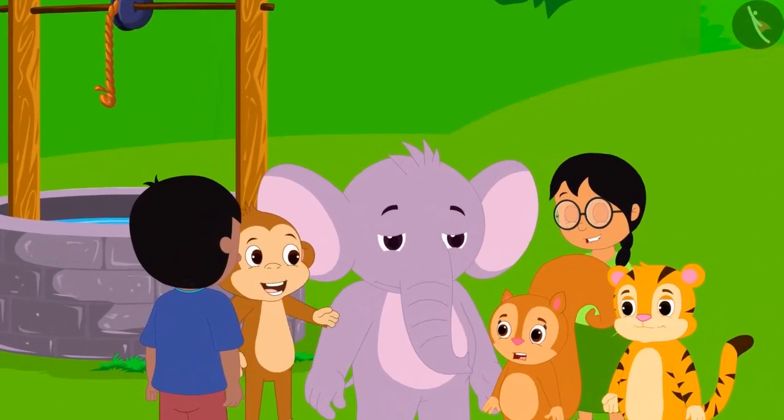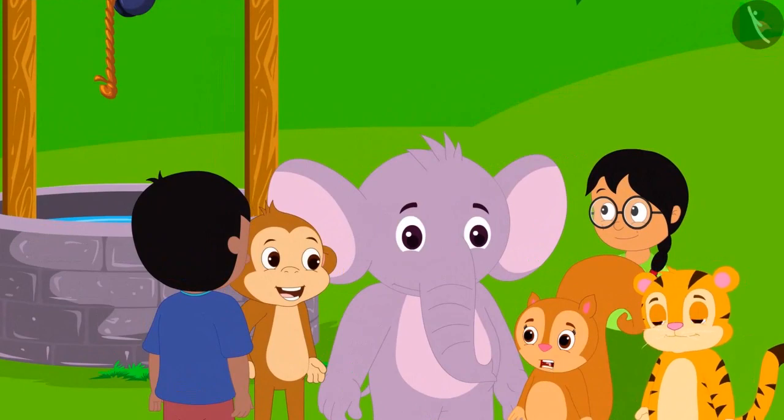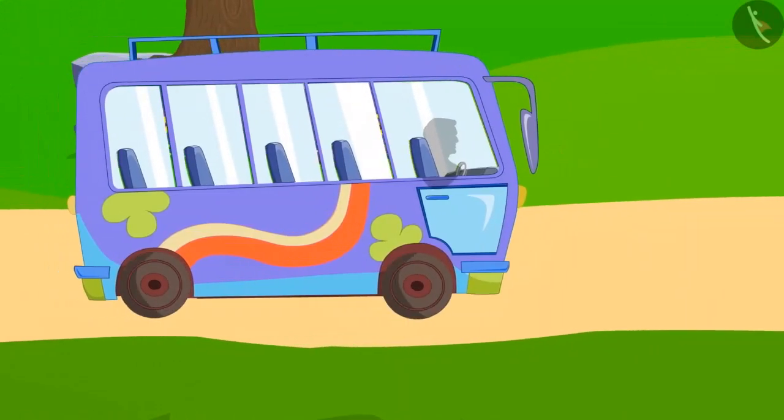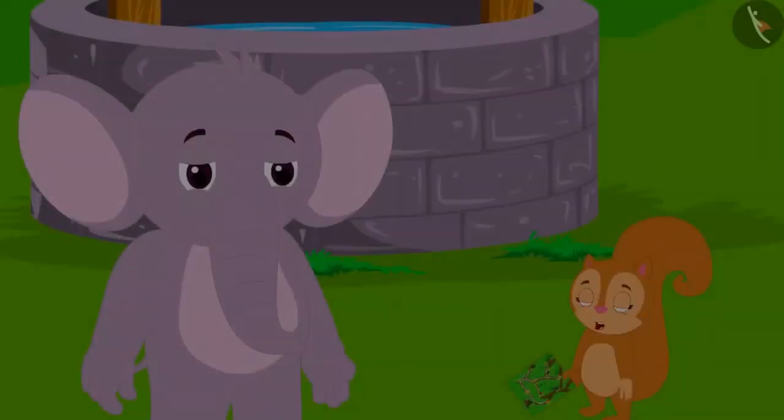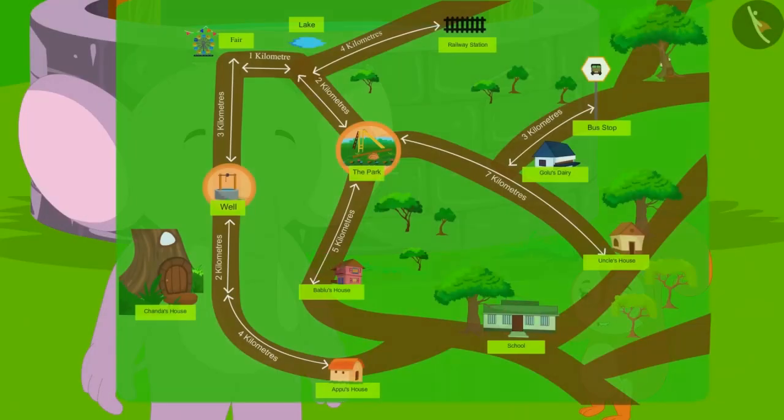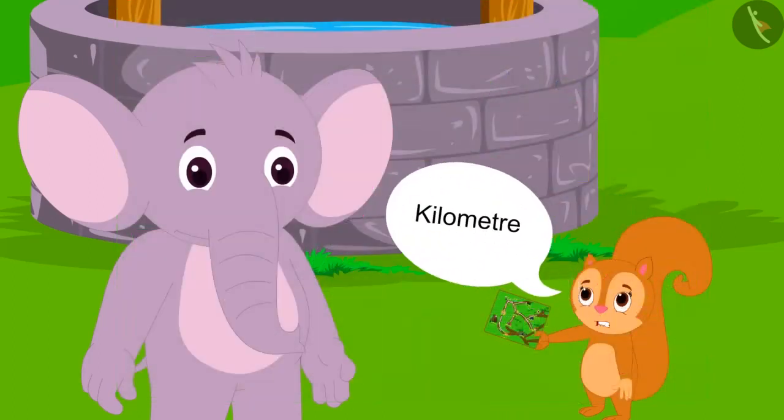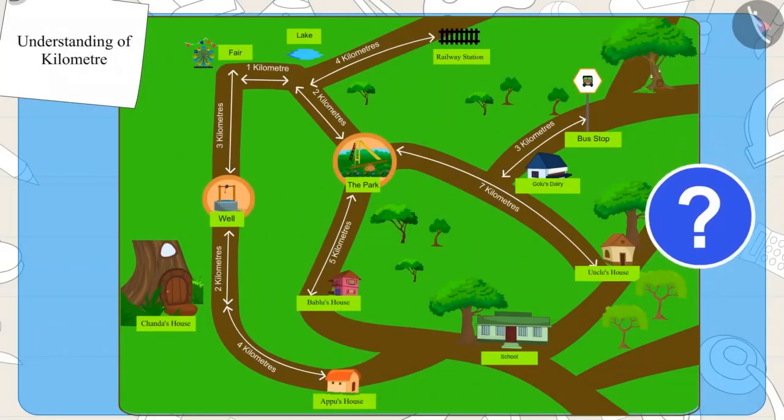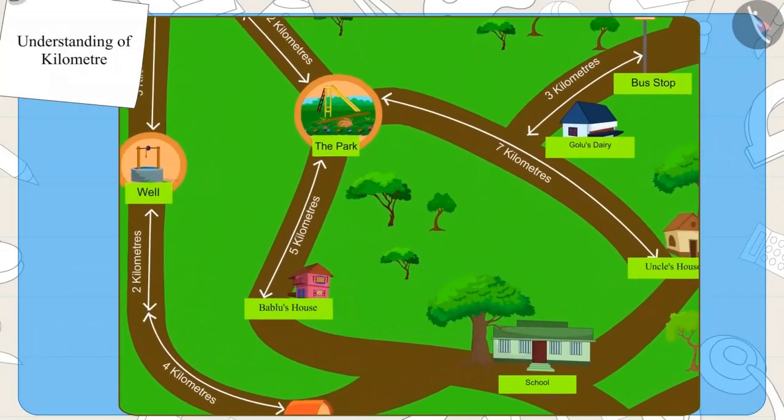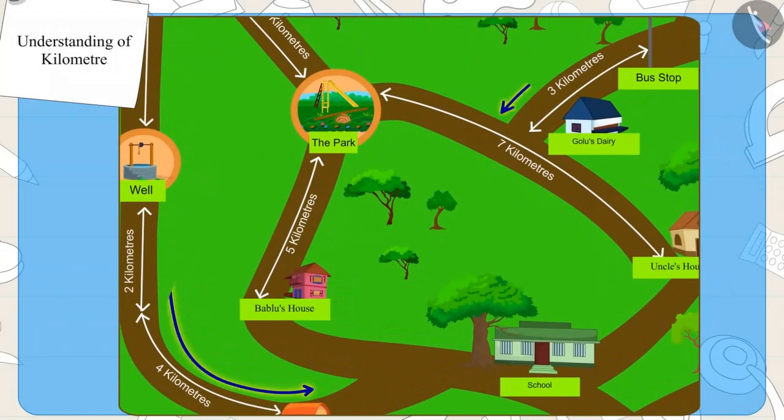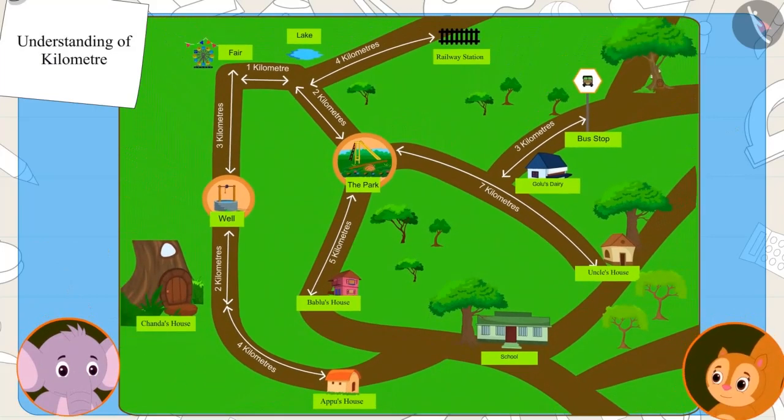The next day, all the village people gathered near the well. There was some time left for the bus to arrive. Chanda then showed Appu a map of his outing and asked him to tell her more about the kilometer. Children, have you seen a map before? Maps often include places and distances between them.